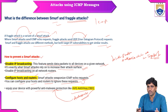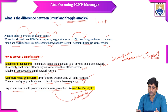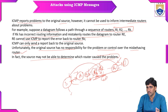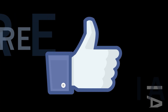The difference between smurf and fraggle attacks: smurf is a DDoS attack; fraggle is a variant sending UDP instead of ICMP requests. To prevent these attacks: disable IP broadcasting and configure hosts and routers securely. ICMP is an error reporting mechanism, not an error correction mechanism — errors during data transmission can be detected but the exact router that caused the problem cannot always be determined. Thank you all — like, share, subscribe, and hit the bell icon for more updates.